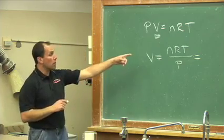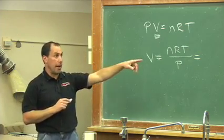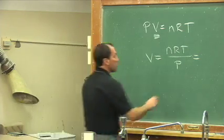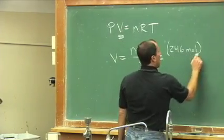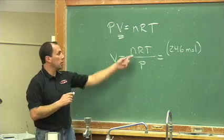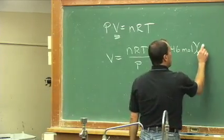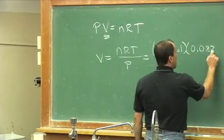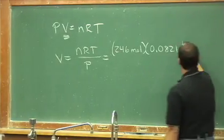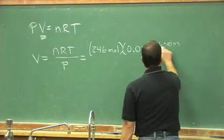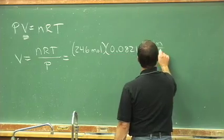N, the number of moles, goes in first. We have that now. 246 moles of CO2. 246 moles of carbon dioxide gas. We always have R. In this equation, we'll use our old standby, 0.0821, with the units of liters times atmospheres over moles times kelvins.